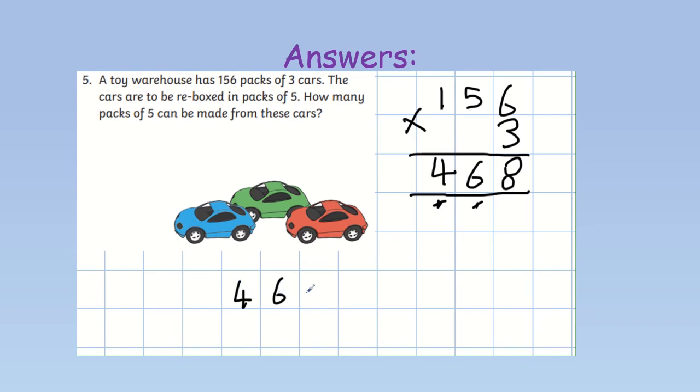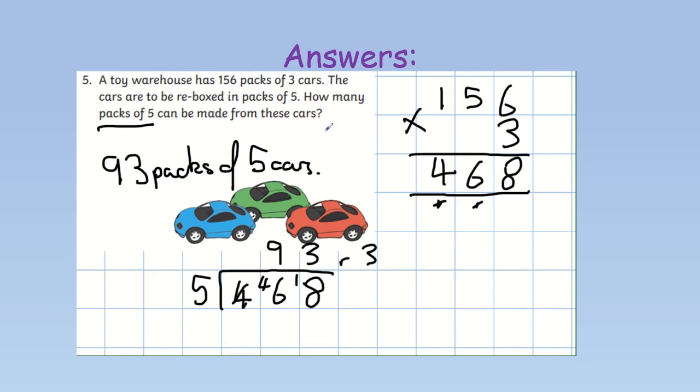That are now ready to be re-boxed into packs of 5. So, now we can do our division. How many 5's are in 4? We can't do. How many 5's are in 46? 9 5's are 45 with one remainder. How many 5's are in 18? Well, 3 5's are 15. So, we have a remainder of 3. So, how many full packs of 5 can be made? 93 packs of 5 cars. Excellent work! Hopefully, you got this one right too. Don't forget to mark your work in a coloured pen and pencil though and make any corrections if you need to.